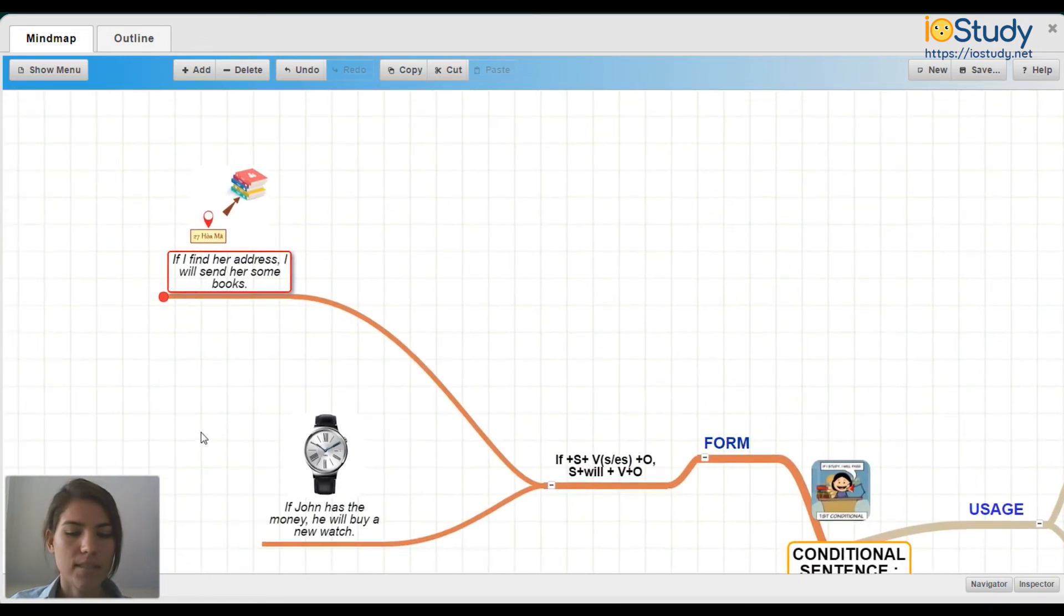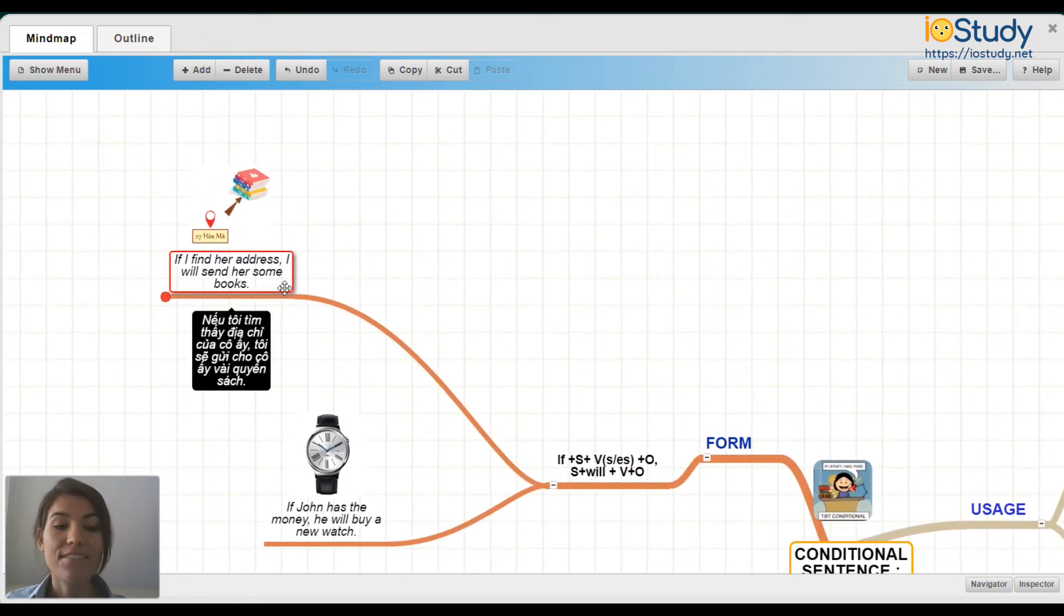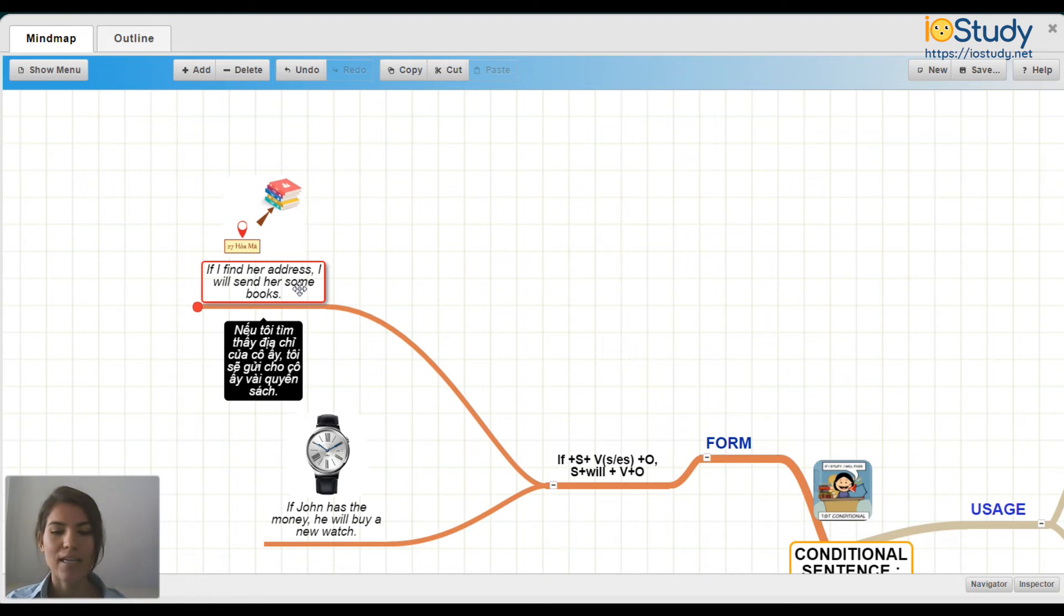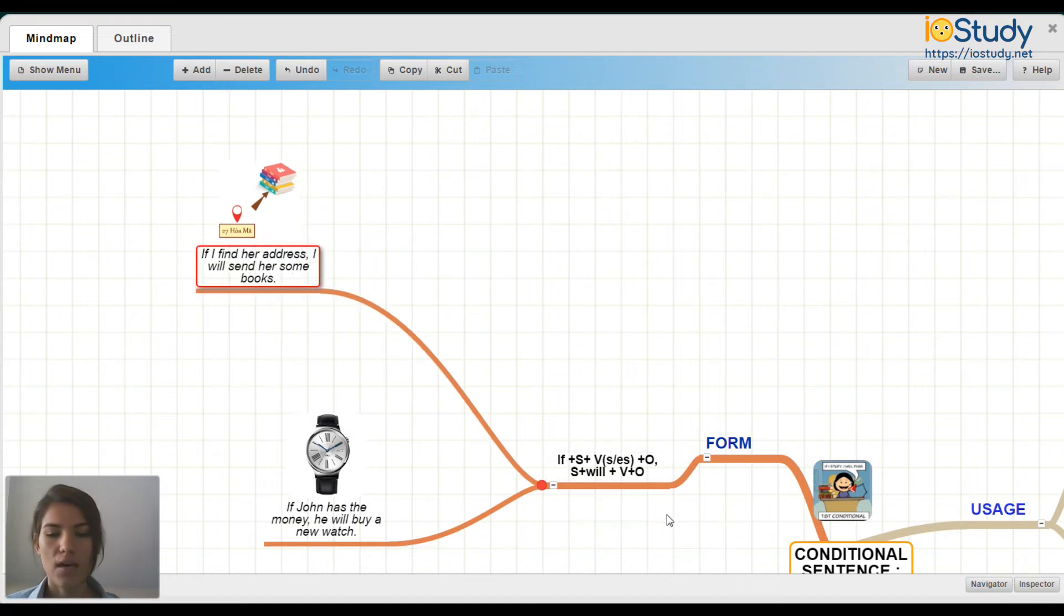So first example of the sentence here. If I find her address, I will send her some more books. So as we can see, this does follow the same form as it is here. If plus subject plus verb s or es plus object, subject plus will plus verb plus object.